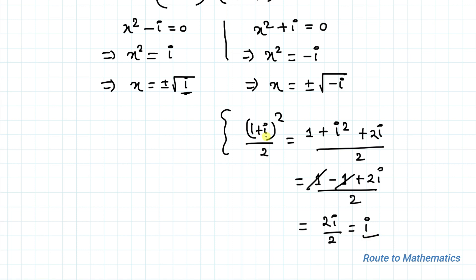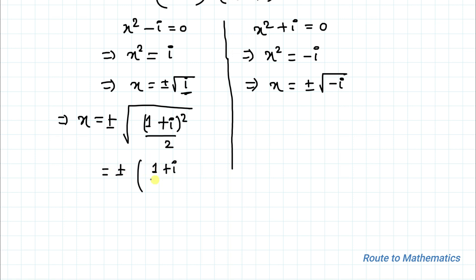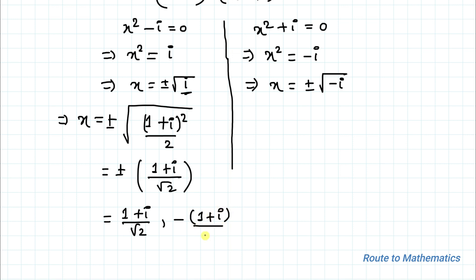Substituting i as 1 plus i whole square divided by 2, we can write x equals plus or minus root under 1 plus i divided by root 2. From here we get x equals 1 plus i divided by root 2, or minus of 1 plus i divided by root 2.